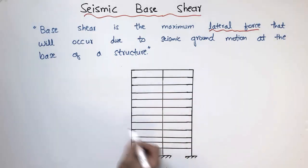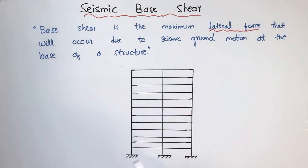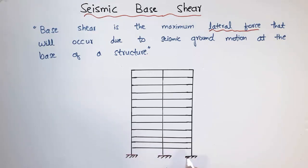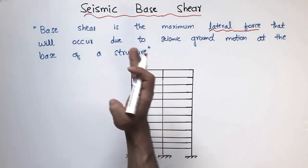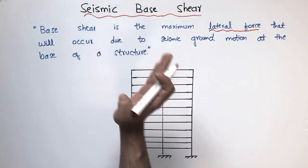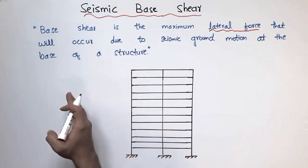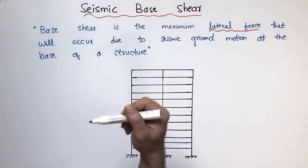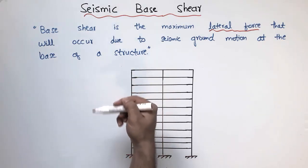To explain this definition, I will take help from this diagram. Consider this is a multi-story building with the foundation shown at the base of the structure. When the earthquake happens, the building starts to deflect from its original position.